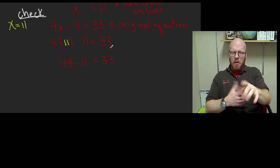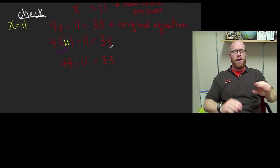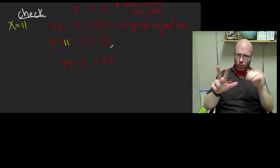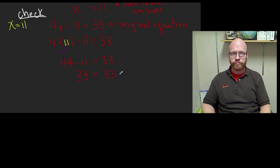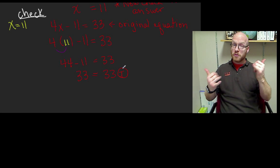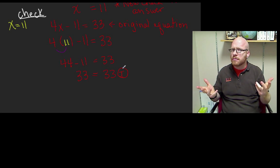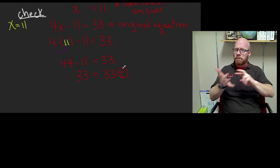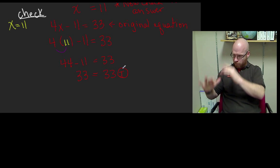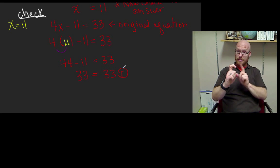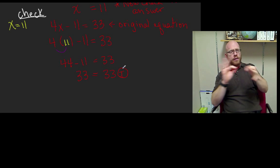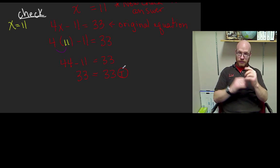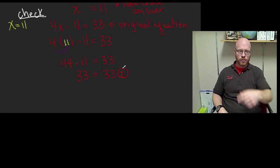You can see 33 equals 33. 44 minus 11 — everybody knows it's 33, but you must prove it. Your job is to prove your answer is correct and follow it through to the very end. Our check does work out. This 'T' means true. It means when x is equal to 11 and we substitute into the equation, the two sides — left and right — are equal. It's a true statement. Our answer gives us a true value for our equation. Any equation's left and right side have to be equal to be true.